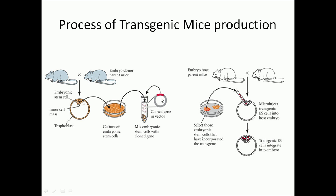Once the cloning is done, we have the gene incorporated into the vector delivery system. We also need to obtain fertilized oocytes. For that we need both an embryo donor female and a male, because fertilization must occur between parent mice. After fertilization, the embryo has different sections: the inner cell mass and the outer cell mass. We focus on the inner cell mass.